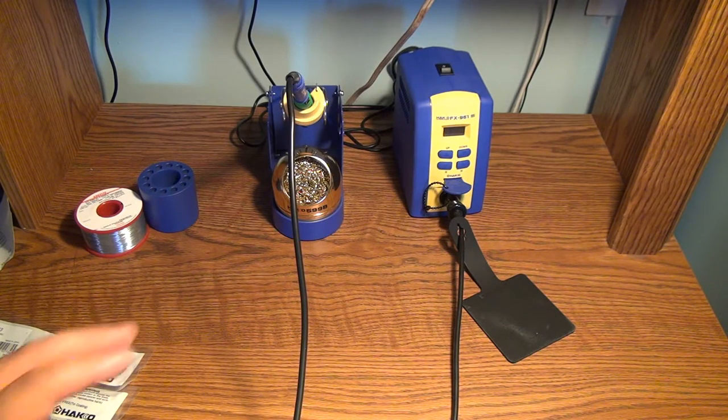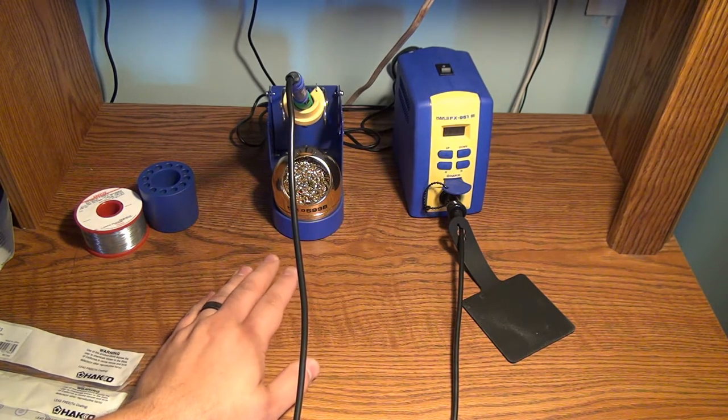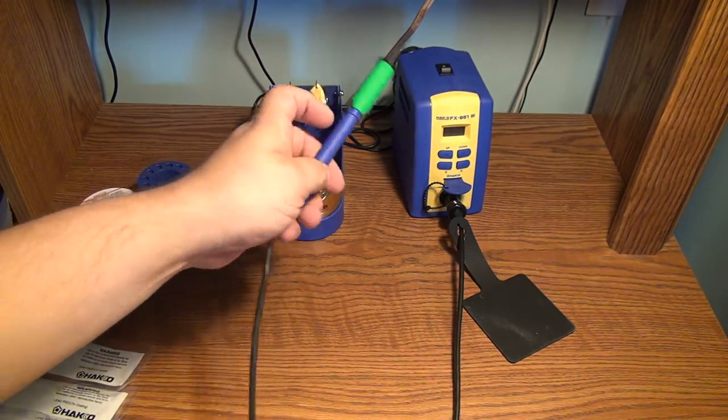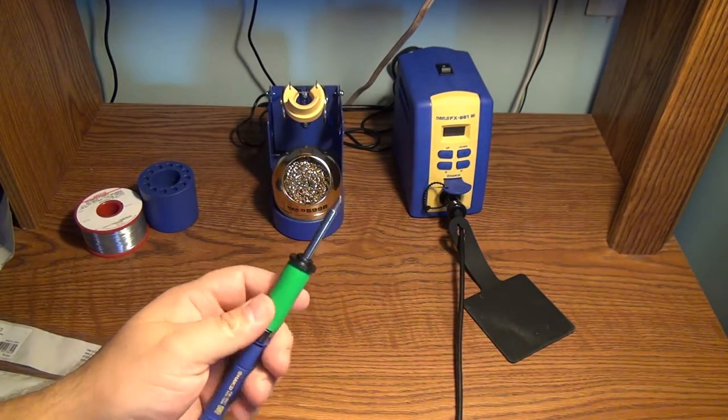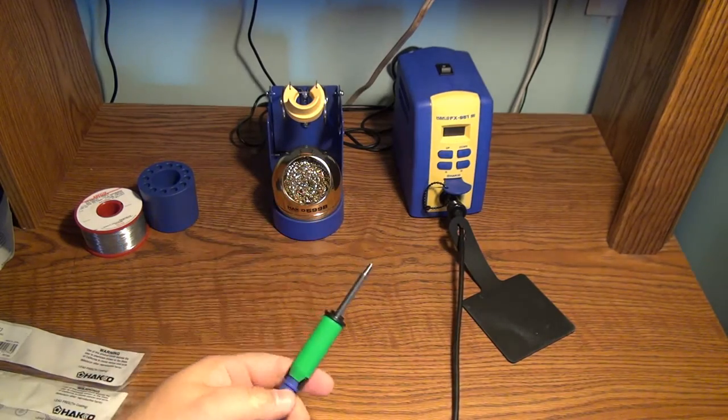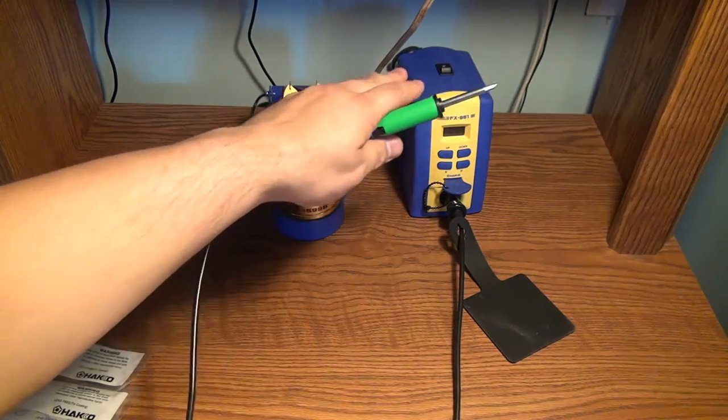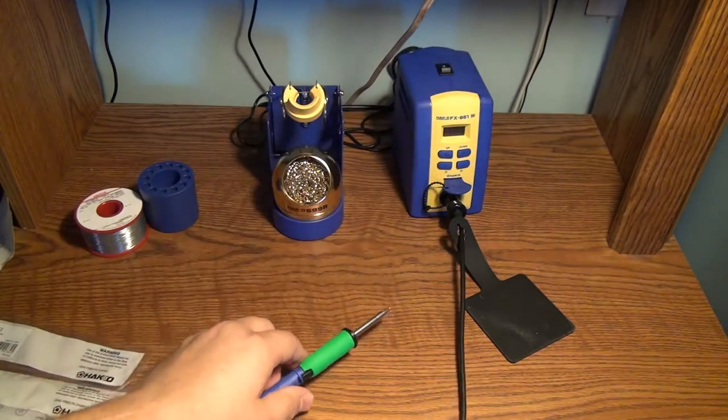Something I forgot to mention, and I wanted to be sure to mention because this is very very important: when you buy the station, the station doesn't actually come with any tips. All of the tips have to be bought separately. As I mentioned previously, I bought the station on Amazon.